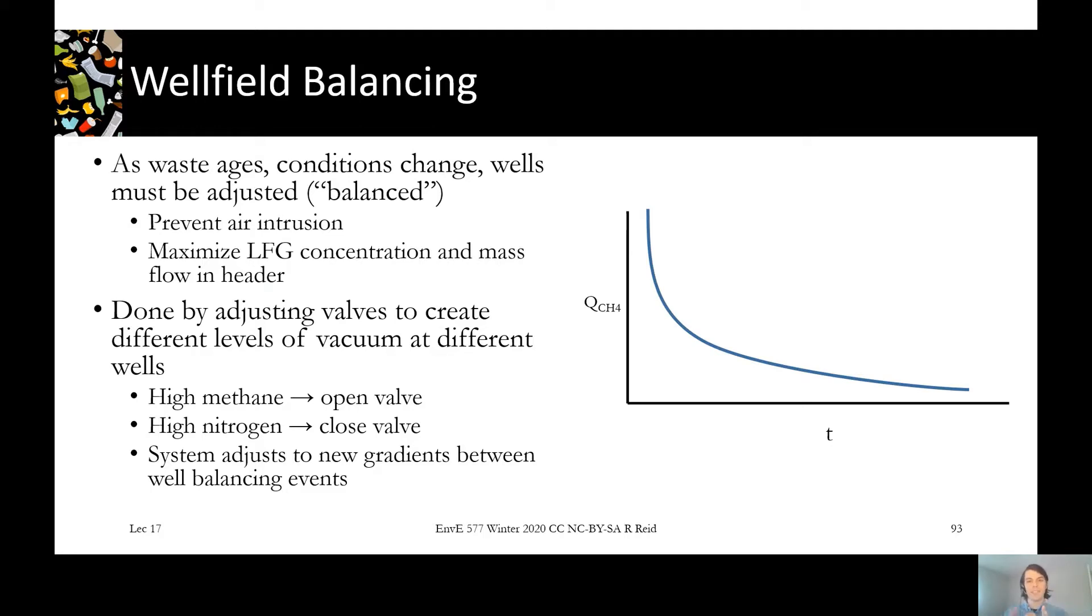So the landfill gas collection system has to be operated to account for this change in the gas over time. And this is done through what's called wellfield balancing, which is a process of adjusting the flow and vacuum in our individual wells to match the instantaneous gas production from that area of the landfill. So some wells will be in older areas of the landfill, some wells will be in newer areas and they'll all need to be adjusted to fit the gas production where they are and then changed over time as that specific area of waste gets older.